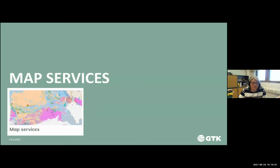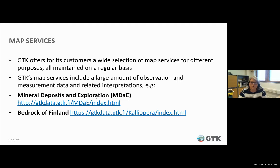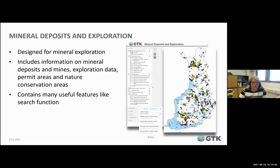We have several kinds of map services for different purposes, and all are maintained on a regular basis. The data products in Hakku and in the map services are the same. We have a large amount of observation and measurement data and related interpretations in our map services. One example is mineral deposits and exploration — it's designed for mineral exploration purposes and includes mineral deposits, mines, exploration layers, permit areas, and nature conservation areas.